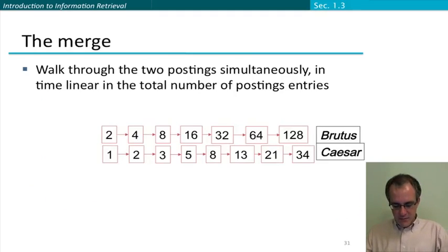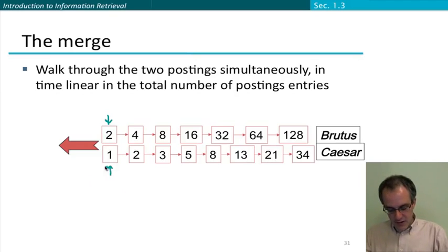The way we do a merge operation to do Brutus and Caesar is like this. We start with a pointer which points at the head of both lists, and what we're going to be wanting to do is work out what's in their intersection. So the way we do that is we ask, are these two pointers pointing at the same and equal doc ID? And the answer is no. So what we do is then advance the pointer that has the smaller doc ID. So now our two pointers are like this and we say, are the two pointers pointing at the same document ID? And here the answer is yes. So we put that into a result list, and then we can advance both pointers.